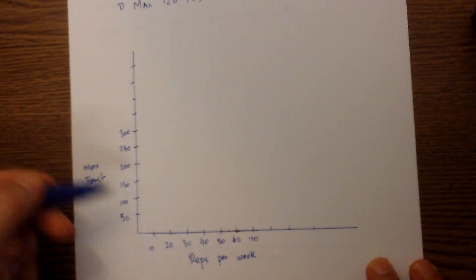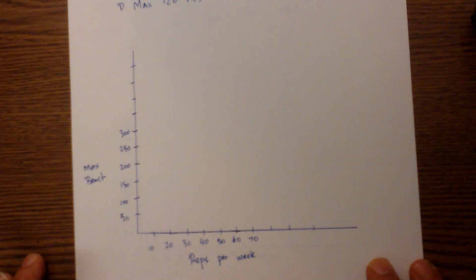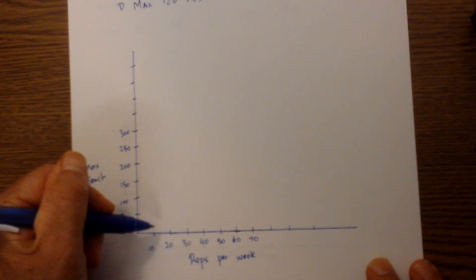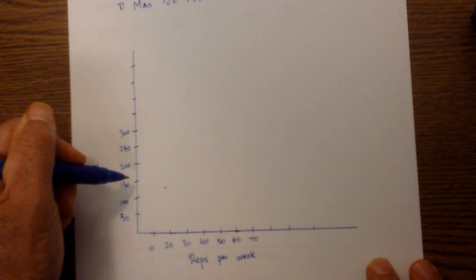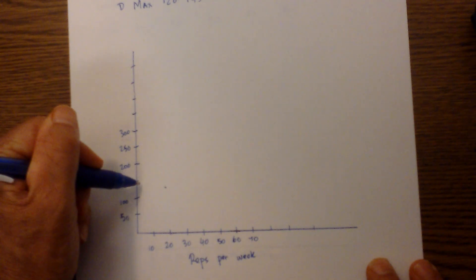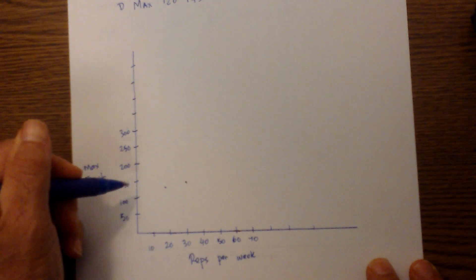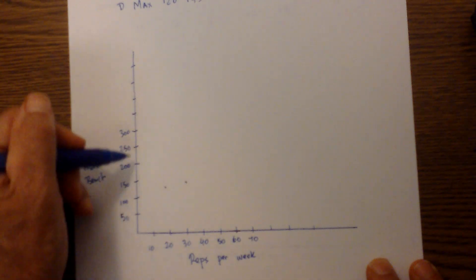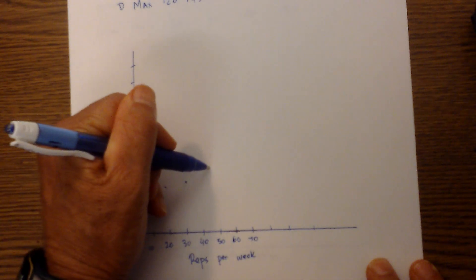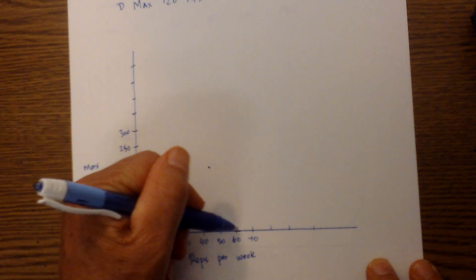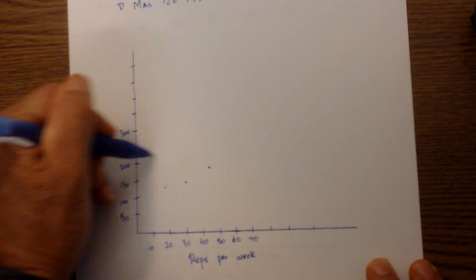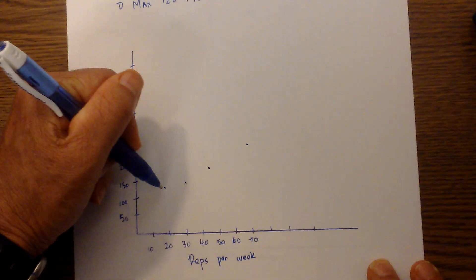Then I can go ahead and graph. We have 30 to 145, and then 40 to 165, and then 70 goes to 220. Then you could either connect them or do whatever you'd like, but the main thing is you have the X and Y set up properly.